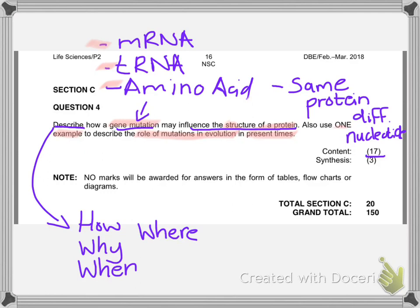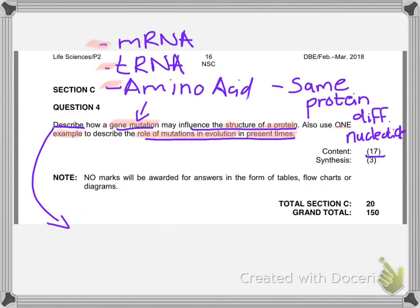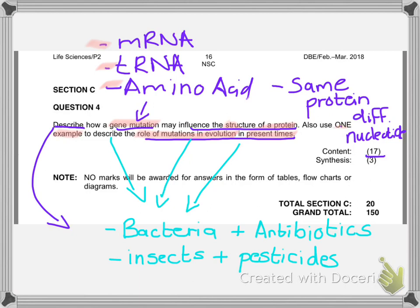The second part of the question asks you to use one example to describe the role of mutations in evolution in present times. Your exam guideline requires you to know at least one present-day evolution example — such as insects becoming resistant to pesticides, bacteria becoming resistant to antibiotics, or HIV becoming resistant to antiretrovirals. You only need to know one, and it doesn't matter which you use, but you must use that example to describe the role of mutations in evolution today.